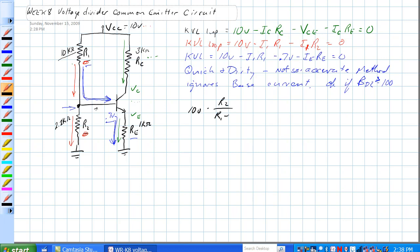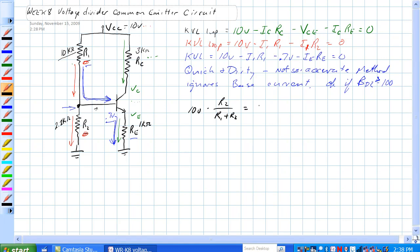R2 over R1 plus R2, which is equal to 10 volts times 2.2k ohms divided by 12.2k ohms. That's equal to, I'll have to get my calculator out and figure it out. Okay, so that's equal to 1.80327 volts.